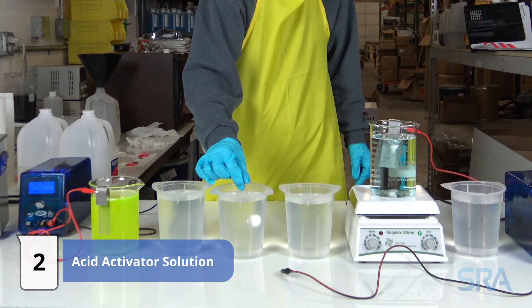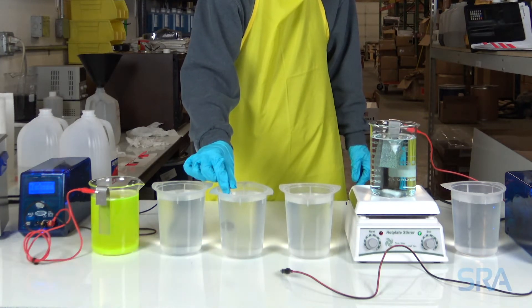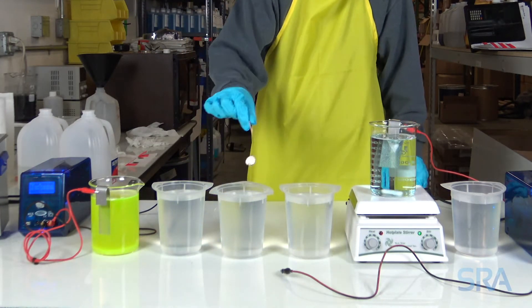Next, acid activate for a few seconds and follow it up with another distilled water rinse. This will neutralize the electro cleaner soap.